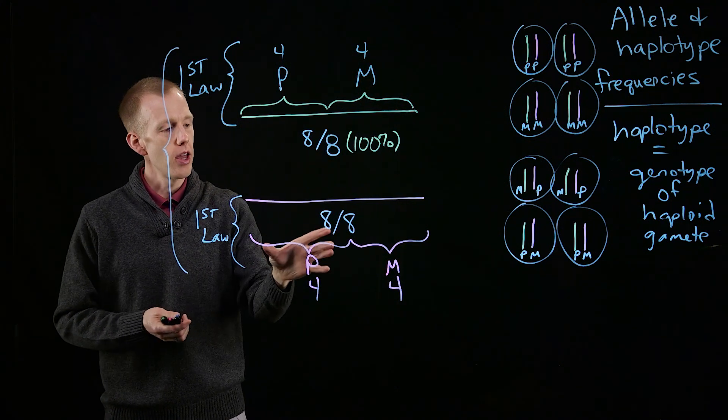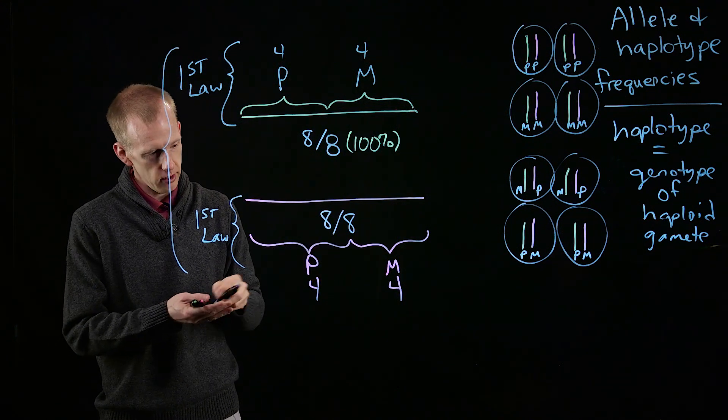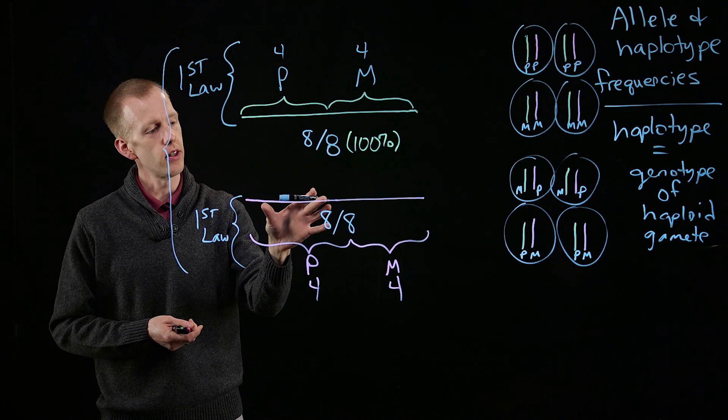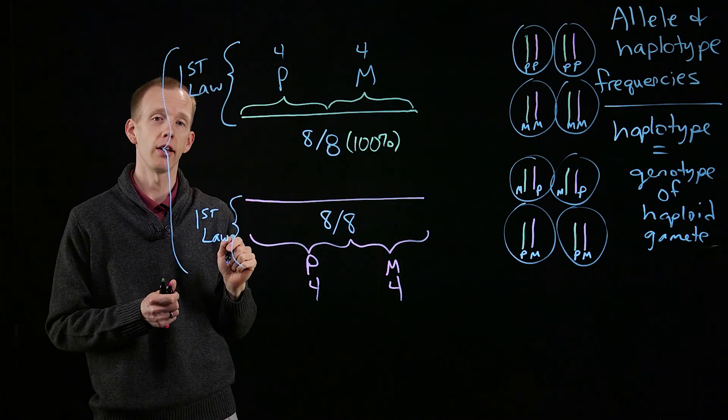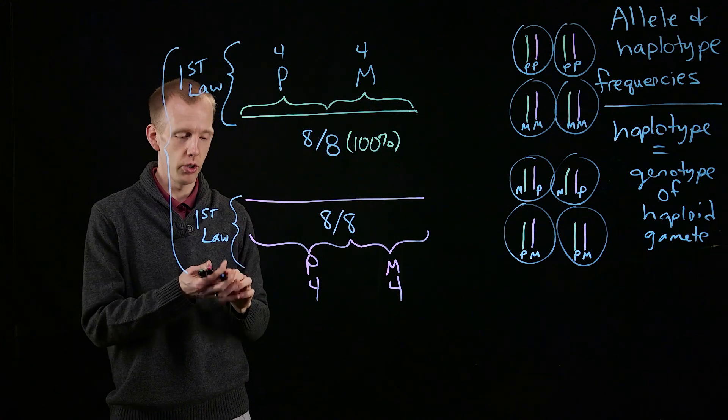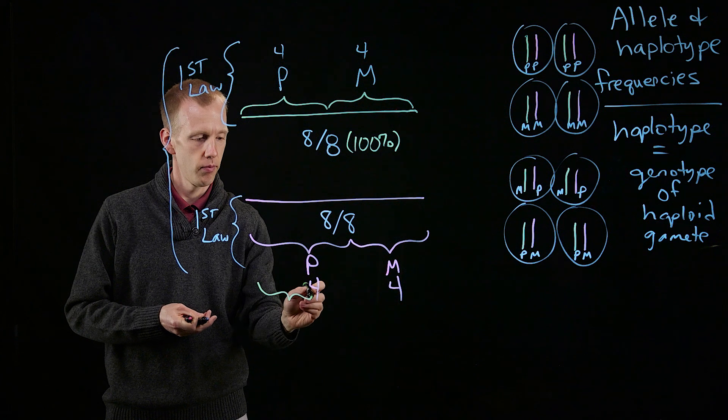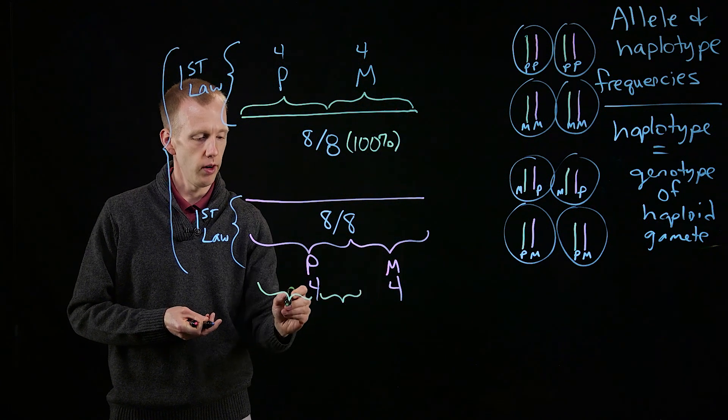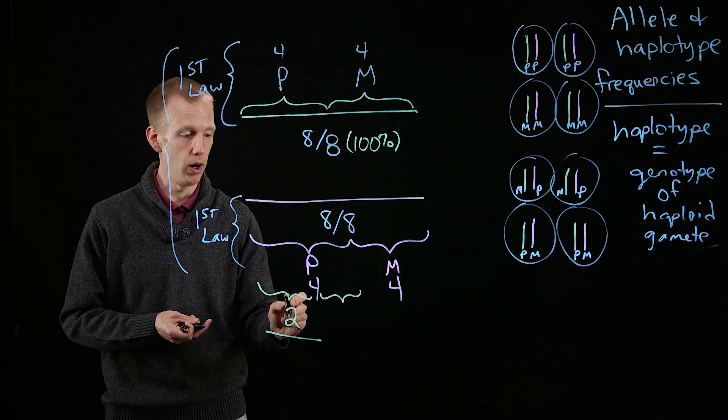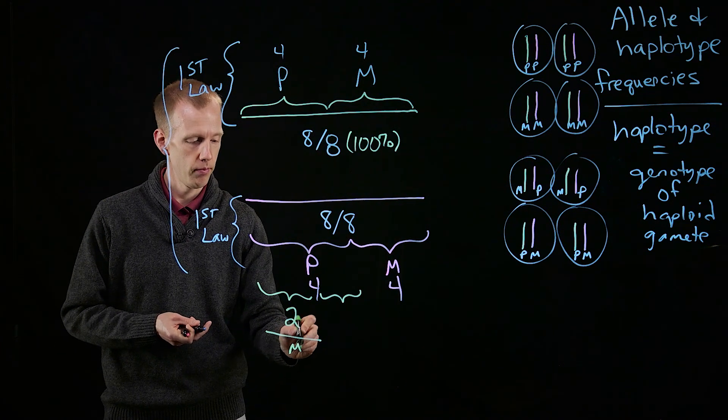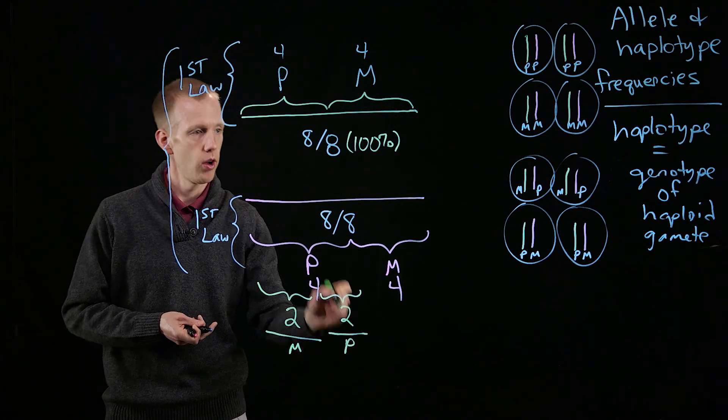So, of the four different gametes that obtained the pink paternal version, what fraction of those, when you look over here on the right, had the maternal green chromosome? We find that two had that chromosome from mom, and another two had that chromosome from dad.